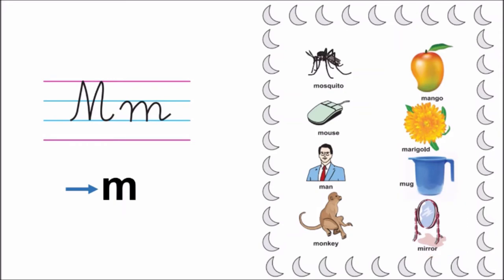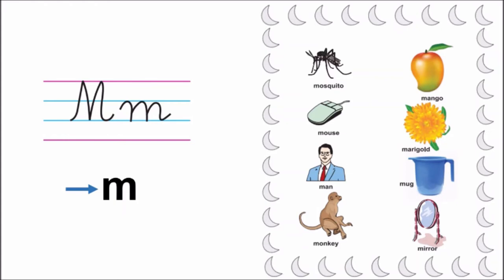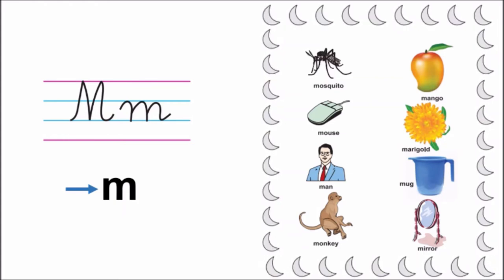And now children, look at the border. This is M-M, moon. Moon comes in the sky at night.